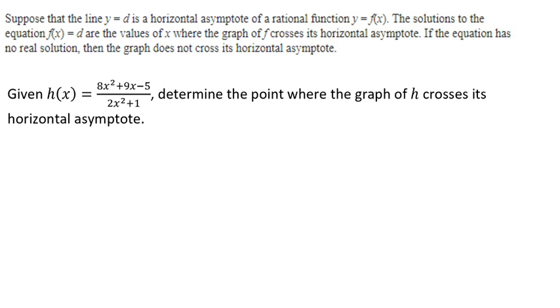So if we're given h(x) equals 8x squared plus 9x minus 5 over 2x squared plus 1, we can determine the point where the graph of h crosses its horizontal asymptote.